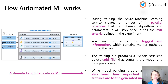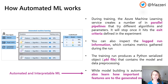You can inspect the log run information, which contains metrics gathered during the run, and these metrics can be very helpful. Finally, the training run produces a Python serialized object — a pickle file — that contains the model and the data preprocessing. While model building is automated, you can also learn how important or relevant features are to the generated model, and this is called model interpretability.